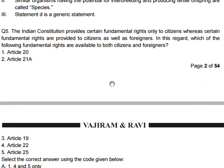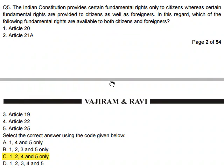The Indian Constitution provides certain fundamental rights only to citizens, while others are available to both citizens and foreigners. Articles 20, 21A, 22, and 25 are available to both citizens and foreigners. Article 19 is not available to foreigners — it is available only to citizens.